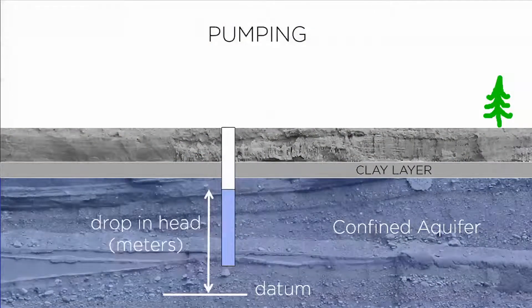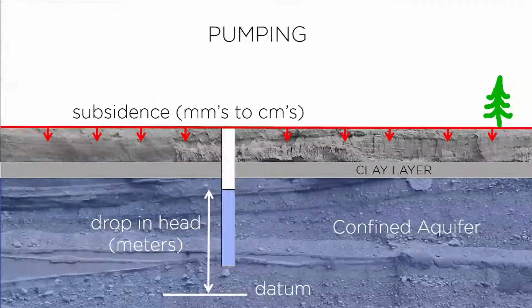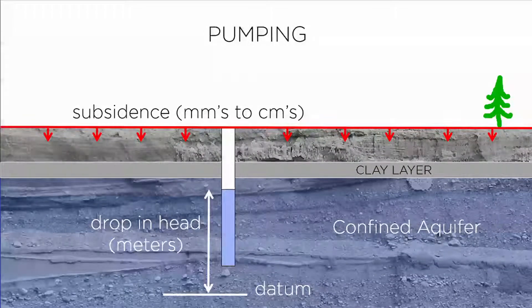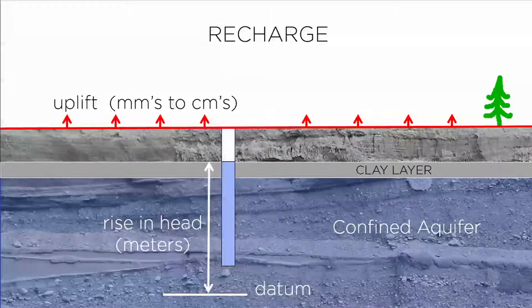Very simply, when you pump, the head level drops — say on the order of meters — and what happens at the ground surface as you pull this water out? Subsidence — on the order of millimeters to centimeters. Then what happens in the San Luis Valley with winter precipitation, rainfall, and snow melt? We get what's referred to as recharge of the aquifer. The head level goes up, and the surface goes back up on the order of millimeters to centimeters. So if we can monitor what's happening at the ground surface, we can monitor what's happening in our aquifer.